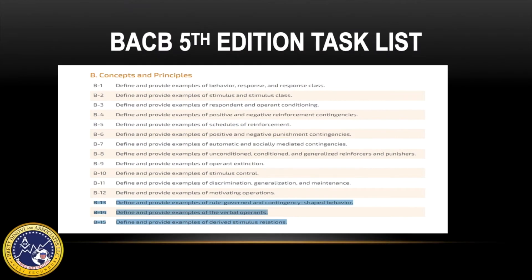This video is based on the following task list items from the BACB's fifth edition task list: B13, define and provide examples of rule-governed and contingency-shaped behavior; B14, define and provide examples of the verbal operants; B15, define and provide examples of derived stimulus relations.